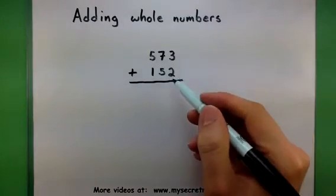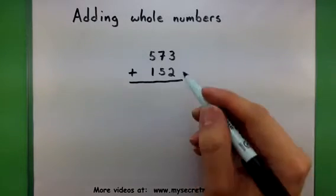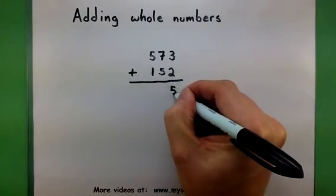So starting with the 3 and the 2, I'm going to add these guys together. So 3 plus 2, I'll get my answer of 5.